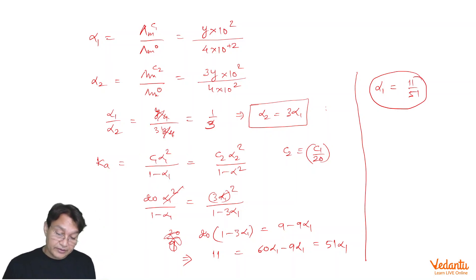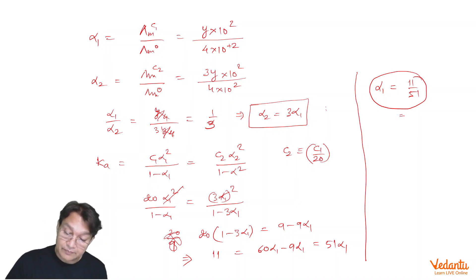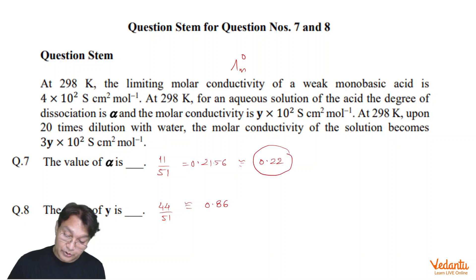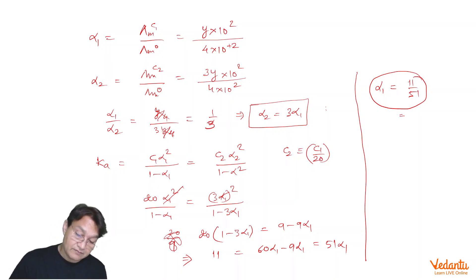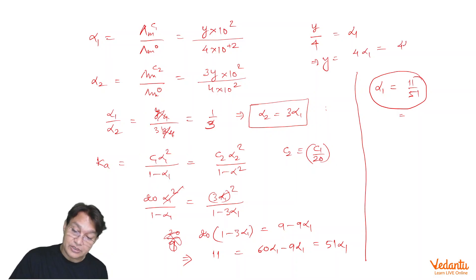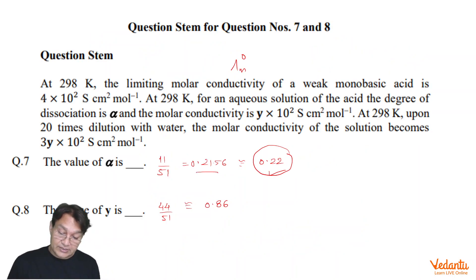Once we get alpha1, we can find y as well. Solving completely gives 0.22 — in fact it is 0.256, which is rounded off to 0.22. Now putting this value of alpha1 into the equation y/4 = alpha1, we get y = 4·alpha1 = 44/51, and solving this gives approximately 0.86.